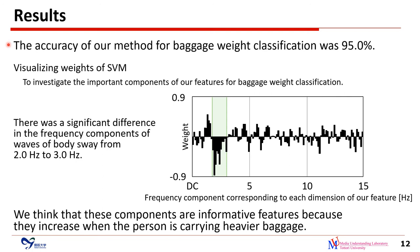The accuracy of our method for baggage weight classification was 95%. To investigate the important components of our features, we visualized the weight vector of the linear SVM. Each dimension of our feature corresponded to a frequency component from DC to 15 Hz. There was a significant difference in the frequency components of body sway waves from 2 Hz to 3 Hz. We think these components are informative features because they increase when a person is carrying heavier baggage.